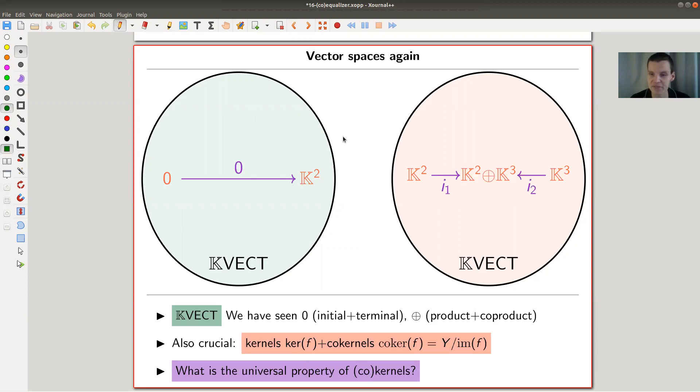For vector spaces we have seen they have very nice universal type objects: zero object, and the direct sum. Initial and terminal object was a zero object, and product and co-product, if you ignore infinite dimensional things, then the direct sum is the product and the co-product. So it's very nice in vector spaces.